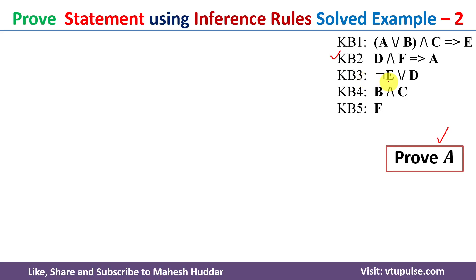D is present in knowledge base 3, but it is with respect to negation of E or D. So to remove this negation of E, we need to get E, which we can get from knowledge base one. That is how we need to understand how we can prove this particular given statement.